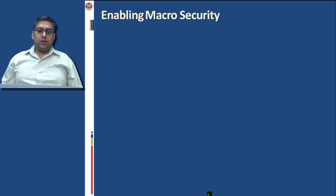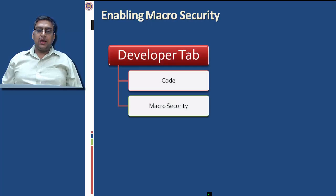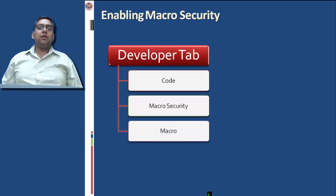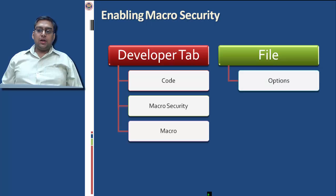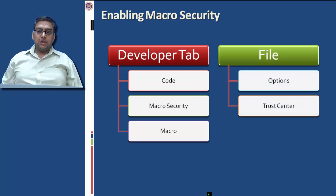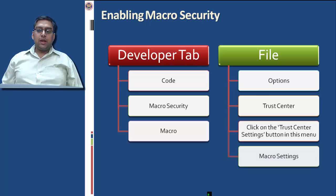Enabling macro security: go to Developer tab, then Code, then Macro Security. The second option is done through File menu, then Options, then Trust Center, then the Trust Center Settings button, and then Macro Settings.